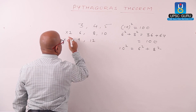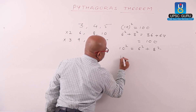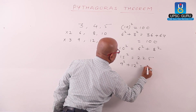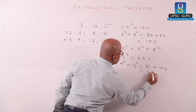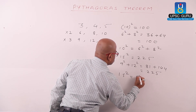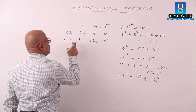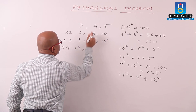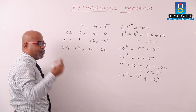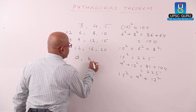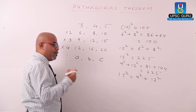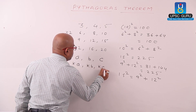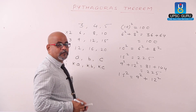Let us check: 15 squared. Similarly, multiplying by 4 gives 12, 16, and 20. We get one more triplet. In general, if a, b, and c is a Pythagorean triplet and we multiply these by some constant k, then ka, kb, and kc also gives us a Pythagorean triplet.